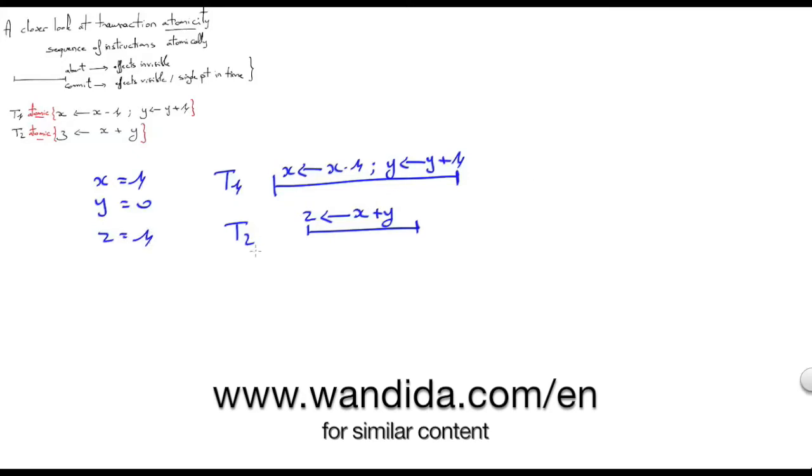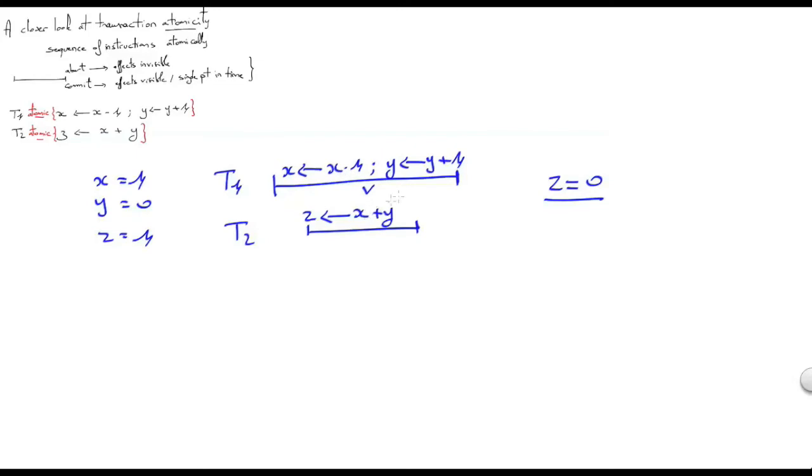The fact that T1 and T2 are atomic means that these transactions should execute in a way that prevents z from being 0, namely z from reading x after we subtracted 1 and y before we added 1. So this is the fact that z should not be equal to 0 is ensured by the very notion of atomicity.